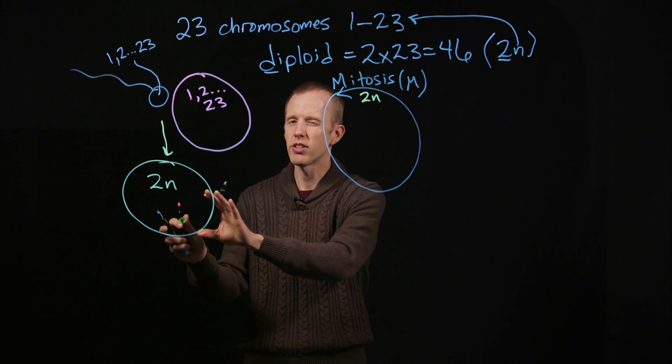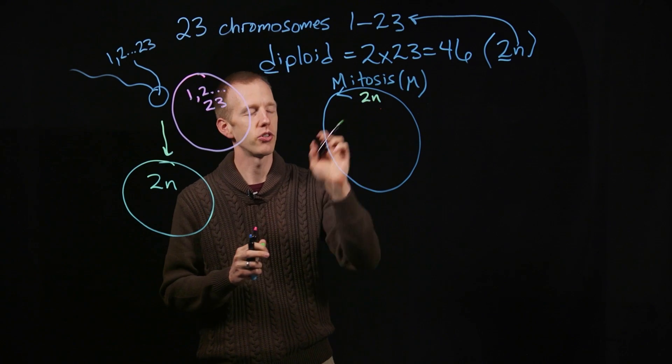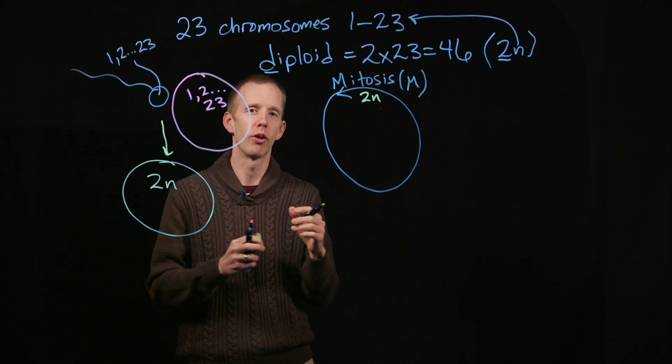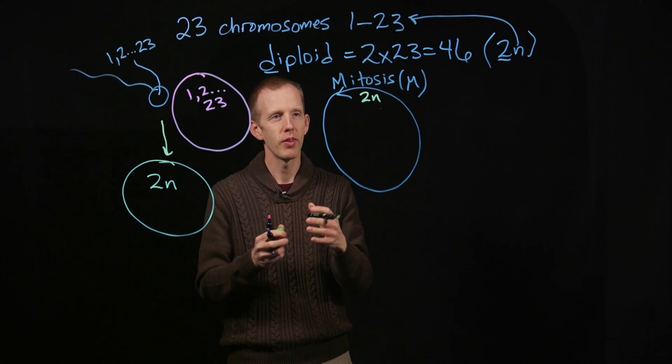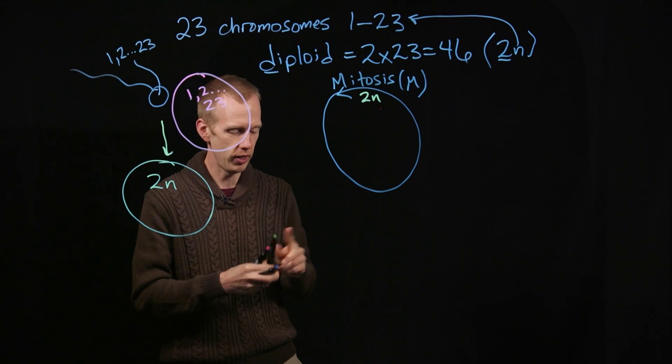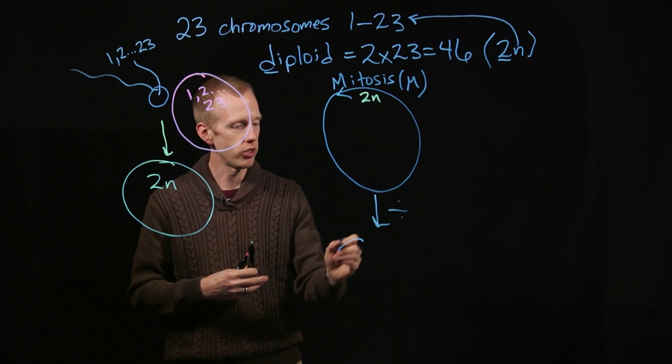This single fertilized embryo, the one-cell embryo, has two copies of every chromosome. A copy of chromosome 1 from dad, a copy of chromosome 1 from mom, and so on. When this cell wants to divide, or is going to divide anyway, to become two cells through the process of cell division,